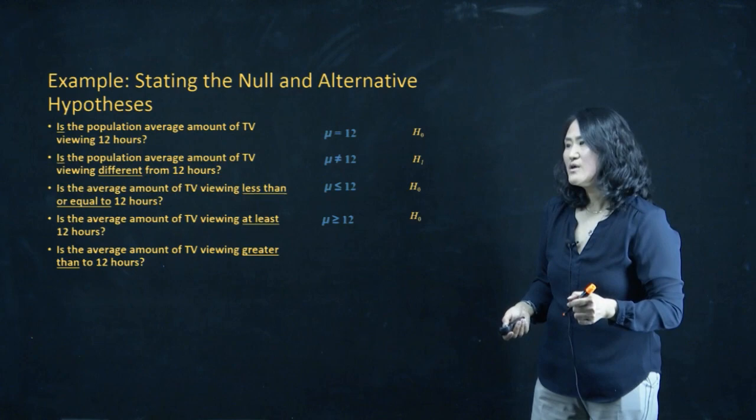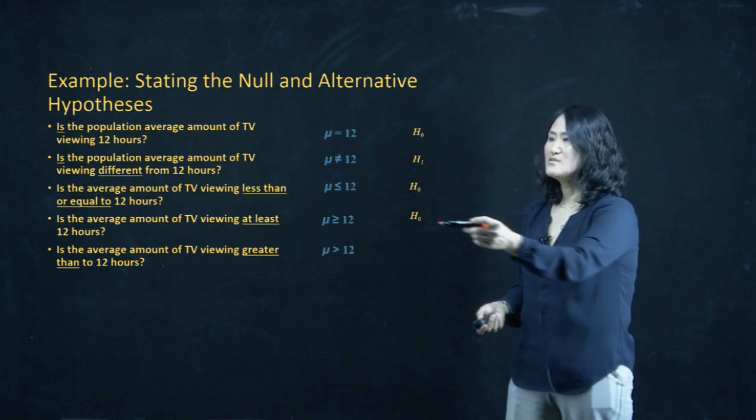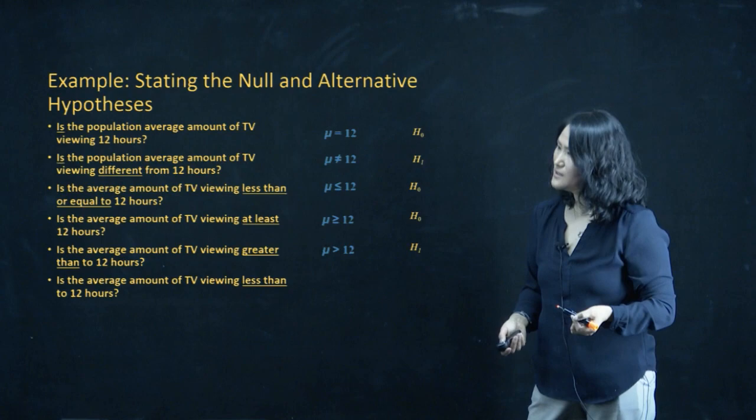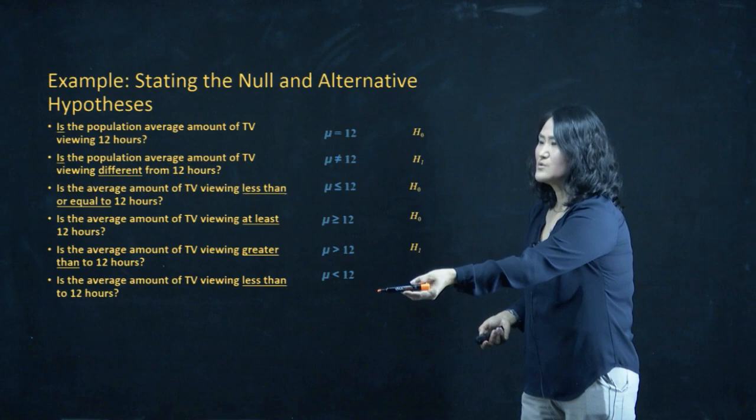The next example: is the average amount of TV viewing greater than 12 hours? It's a strict greater than, so there is no equality sign — this is H1, the alternative. The last example: is the average TV viewing less than 12 hours? Again, it doesn't have the equality sign, so this one is also the alternative, H1.